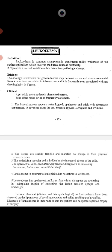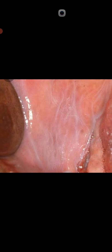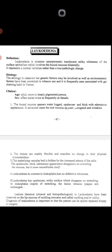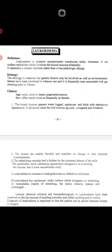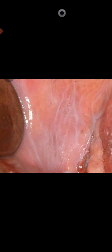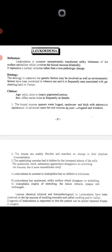The buccal mucosa appears water-logged, opalescent, and thick with an edematous appearance. In advanced cases, the oral mucosa appears corrugated and wrinkled with a milky white appearance. The tissues are readily flexible with no change in their physical characteristics. The underlying vascular bed is hidden by the increased edema of the cells, which causes the white appearance.